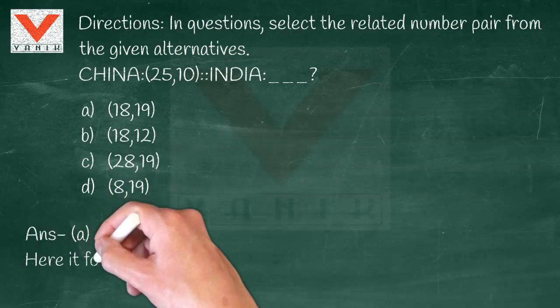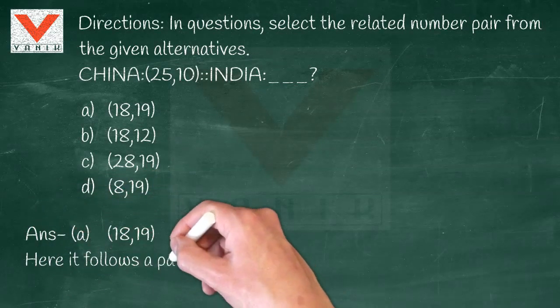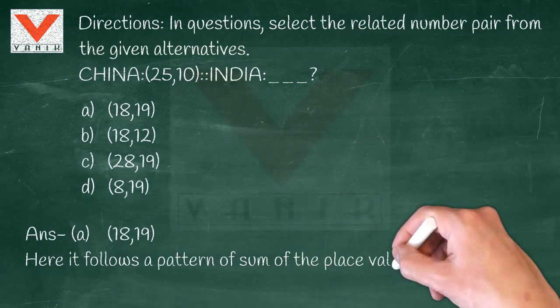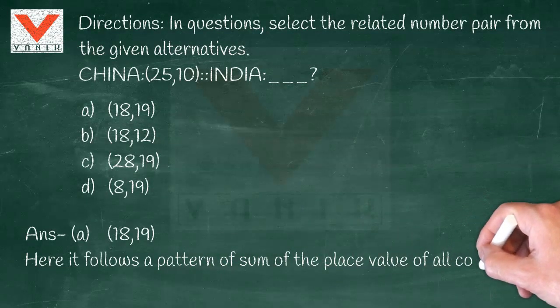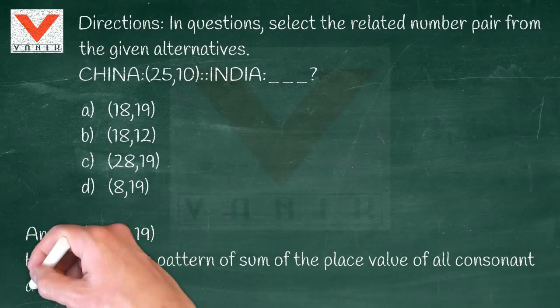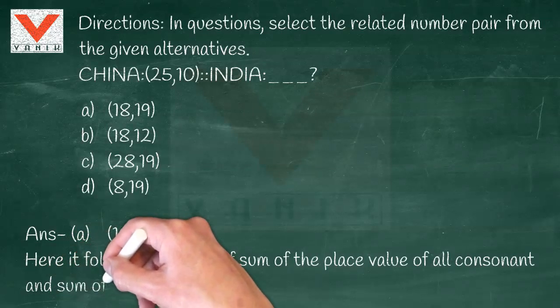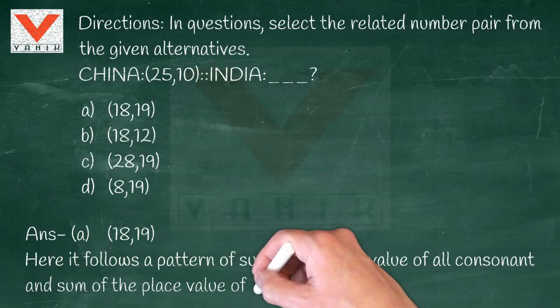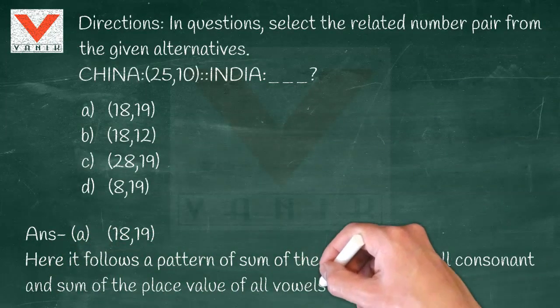The answer is A) 18, 19. Here it follows a pattern of the sum of the place value of all consonants and the sum of the place value of all vowels.